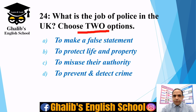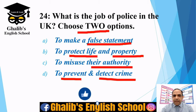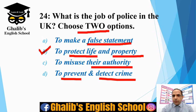Question twenty-four: what is the job of the police in the UK? Choose two options from: to make a false statement, to protect life and property, to misuse their authority, or to prevent and detect crime. Police have two important duties: option B — they are supposed to protect life and property — and option D — they are supposed to prevent and detect crime.